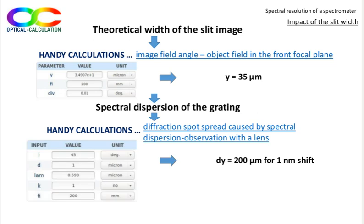In our case, we can see that this lateral shift is 200 microns. So, using a rule of 3, the 35 microns width of the perfect image of the slit is equivalent to a spectral spread of 0.175 nanometer. Thus, at this stage of the study, the spectrometer resolution is limited by the slit and is 0.175 nanometer.